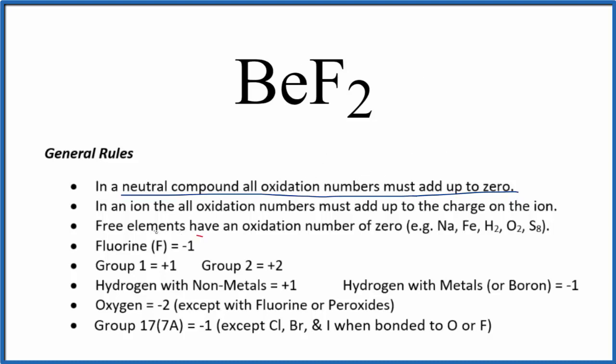If we look down our list, fluorine is always going to be minus one. It's a very electronegative element. So each fluorine here is minus one.